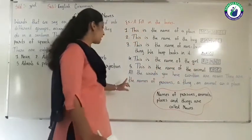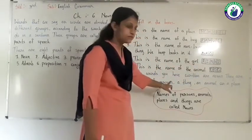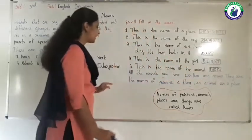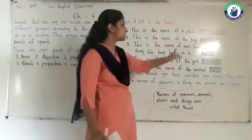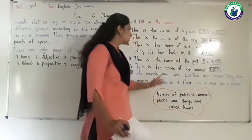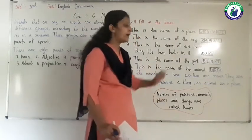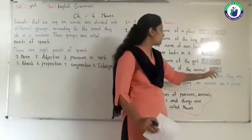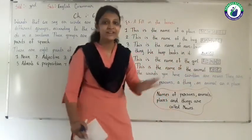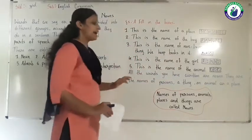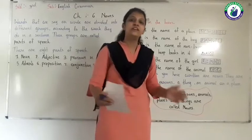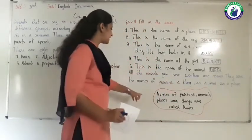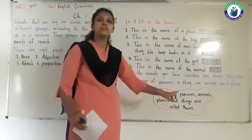These words are nouns. They are the names of persons, things, animals or places. The definition of noun: names of persons, animals, places and things are called nouns.